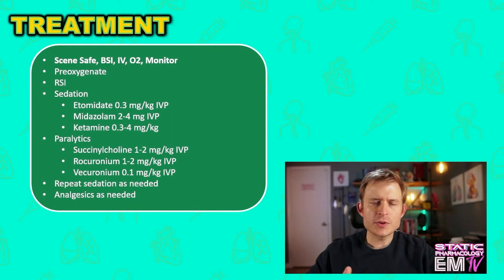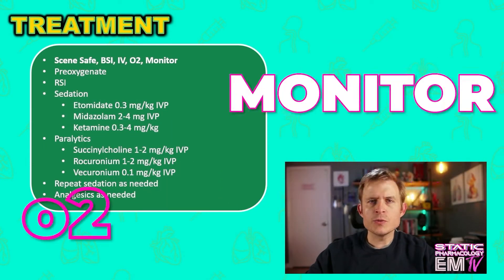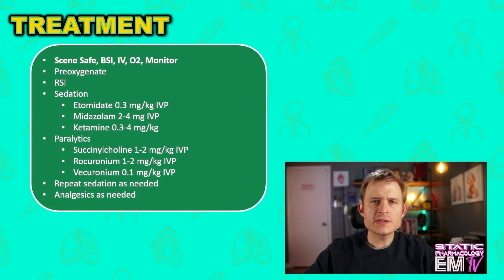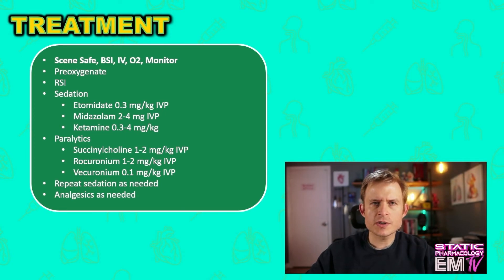I'll begin treatment just like I do with all my other static cards by reciting the mantra: scene safe, BSI, IV, O2, monitor. The next thing I should do is pre-oxygenate this patient. Her baseline O2 sat on room air was 87%. Due to the phenomenon of oxygen dissociation, the lower that SpO2 gets, the quicker it drops. So I want to pre-oxygenate this patient the best I can before I attempt RSI.